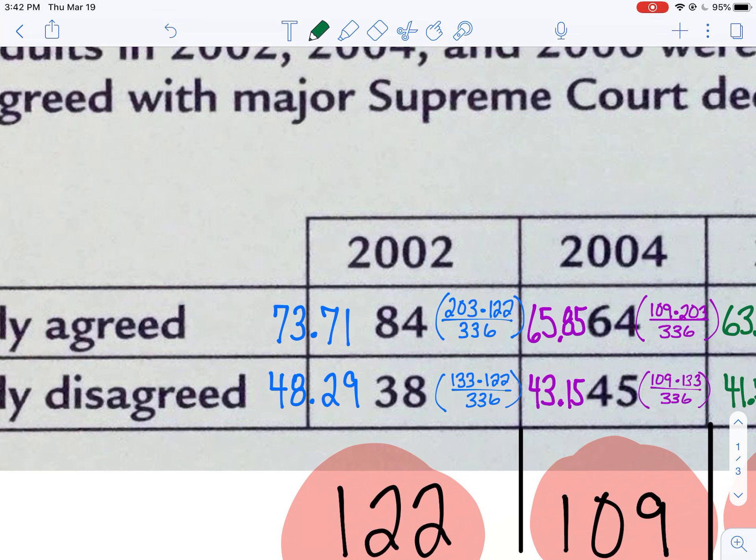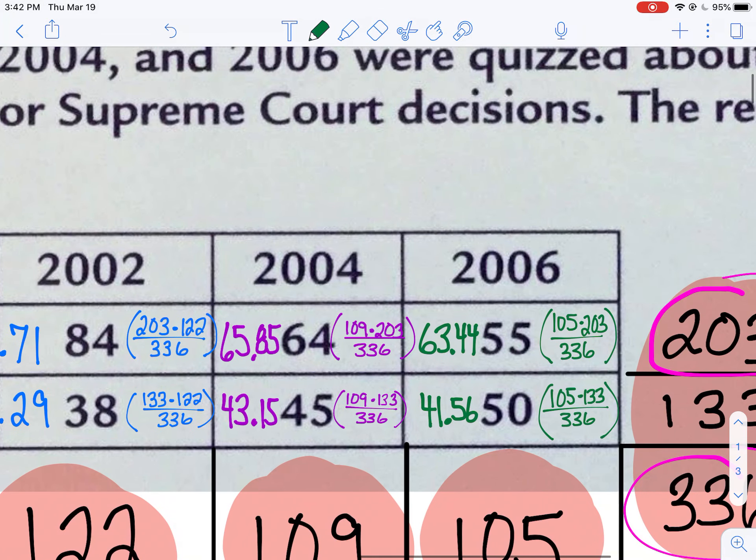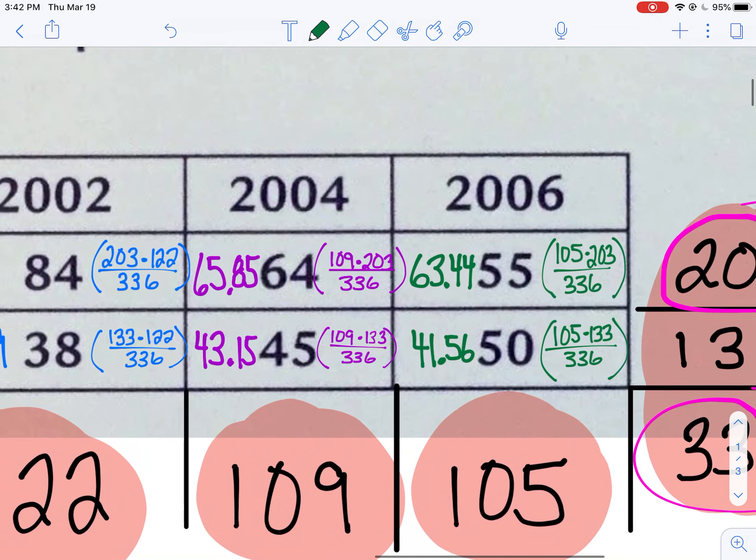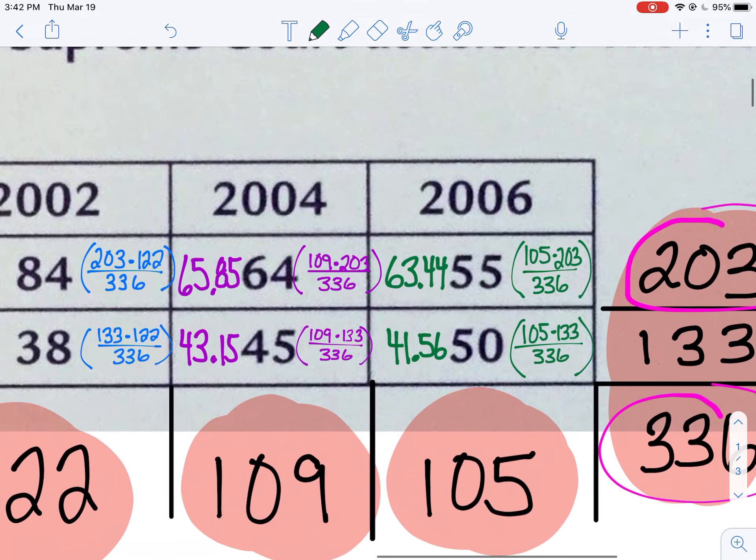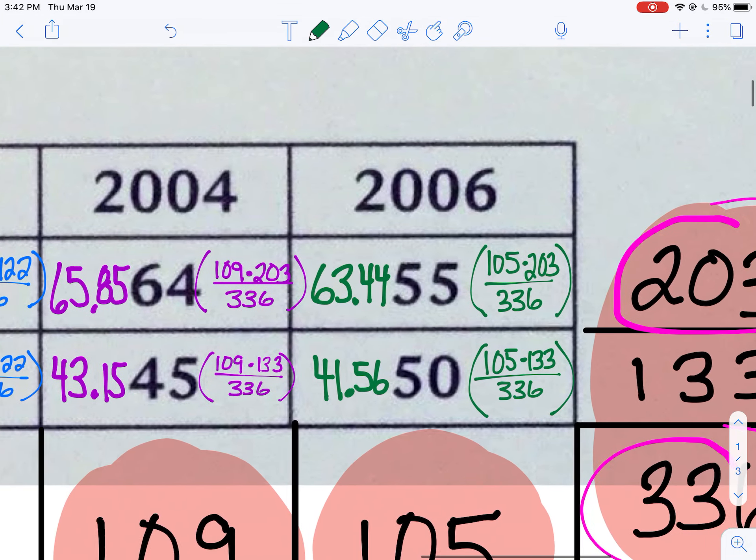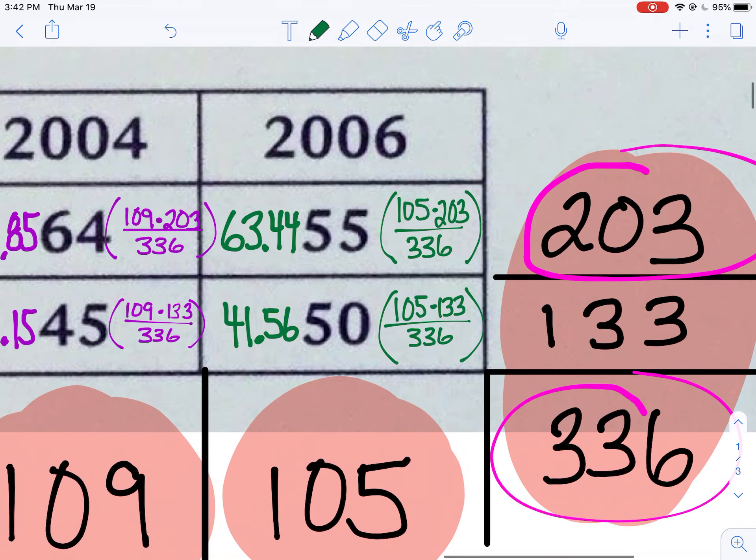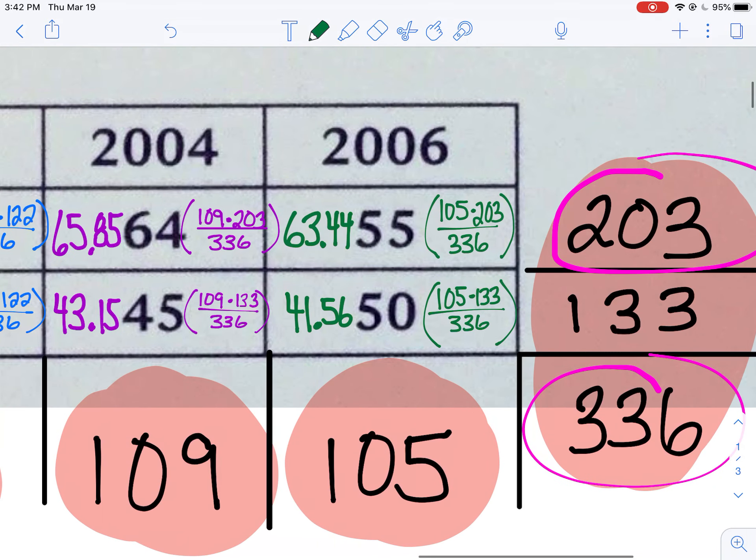Always keep your decimals. Don't turn them into integers. Keep them as decimals. You'll notice I did that for everyone going across here. So for 2004 here, I did 109, which was my column total, times my row total of 203, divided by 336. In 2006, I did my column total of 105 times 203, divided by 336.